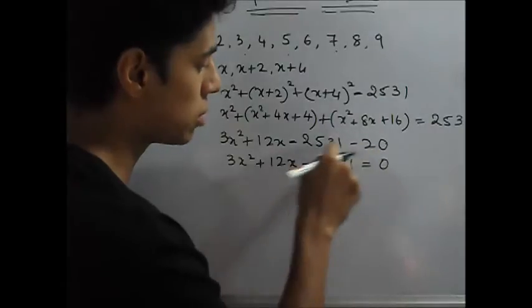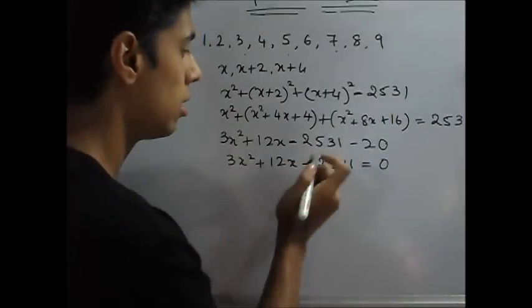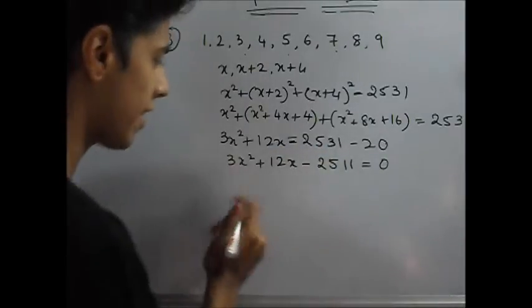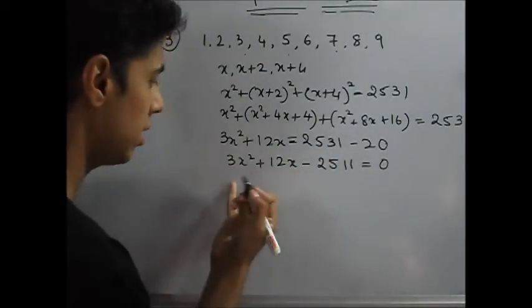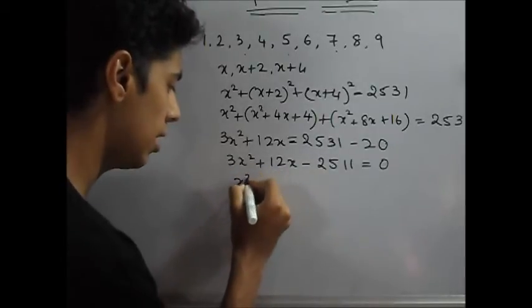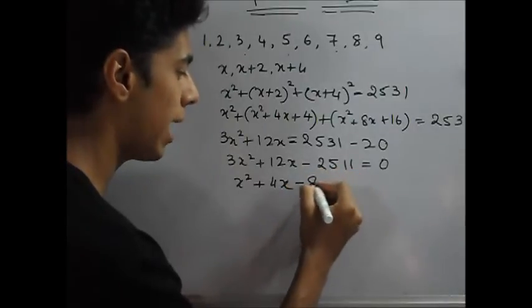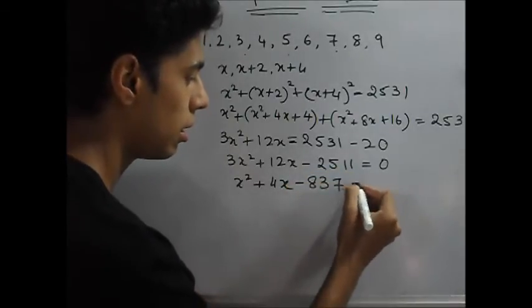So now you can write this 3x square plus 12x minus 2511 is equal to 0. 20 if you subtract from 2531, it gives you 2511. I've taken it from this side so it becomes minus. Now let's factorize this. Before factorizing, you see the 3 is here. You want this to be x square, so divide it by 3 completely. So this becomes x square plus 4x minus 837 is equal to 0. 2511 divided by 3 gives you 837.